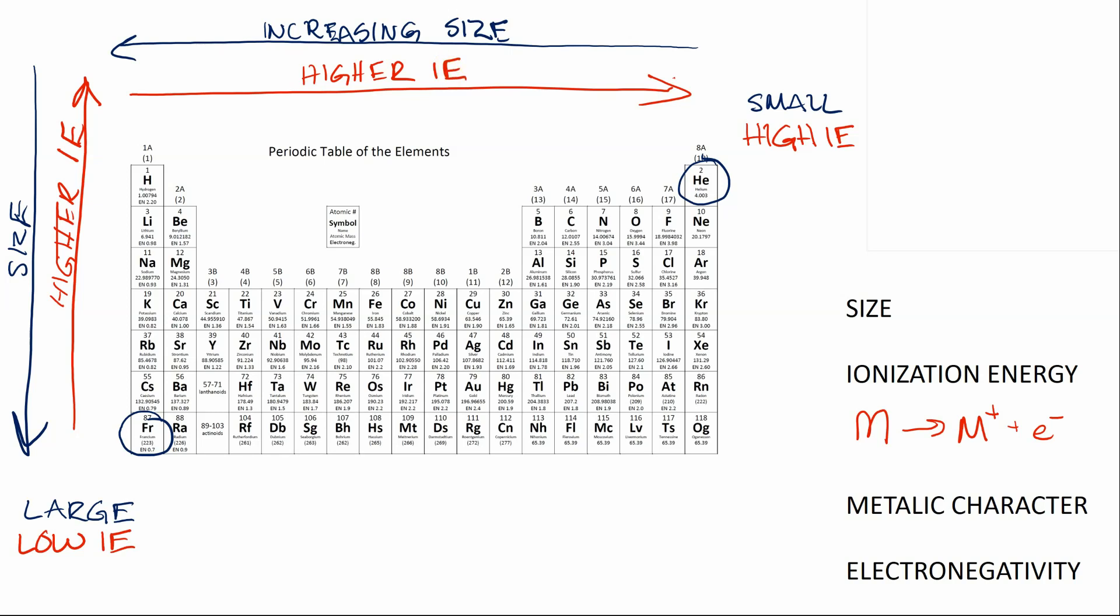Metallic character refers to a whole bunch of properties about metals and things that behave like metals. One of them is their ability to conduct electricity. Others are malleability. The highest metallic character is going to be francium. Helium is the least metallic. Small size, low metallic character.